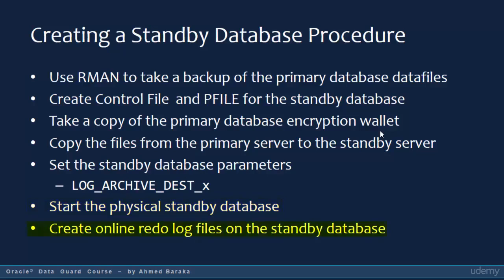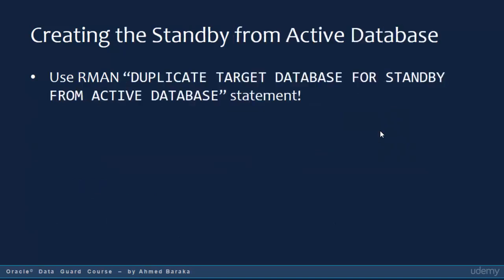Creating online redo log files manually has a lot of steps. A better alternative is creating the standby from the active database using the RMAN command: DUPLICATE TARGET DATABASE FOR STANDBY FROM ACTIVE DATABASE. This is a very good method because RMAN will automatically take care of creating the data files, SPFILE, and control files — handling most of the manual steps from the previous procedure. We will use this method in the practice in the next lecture.